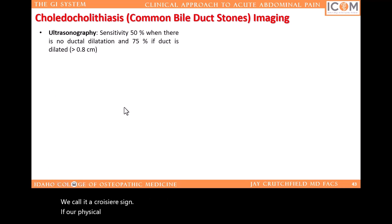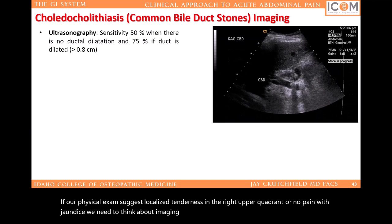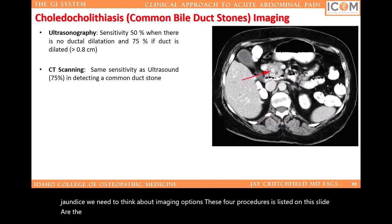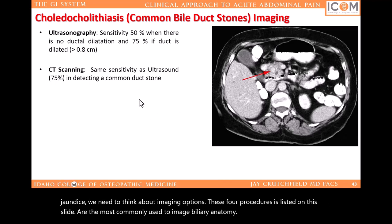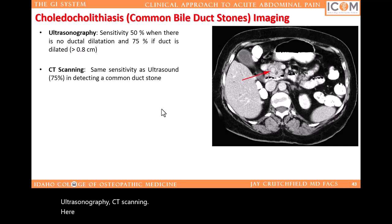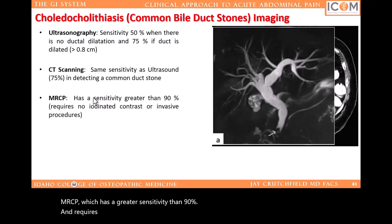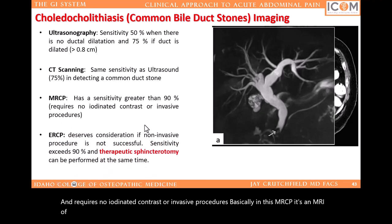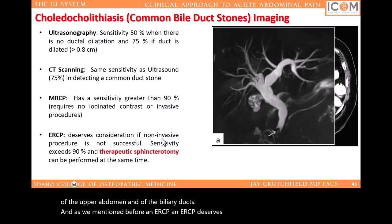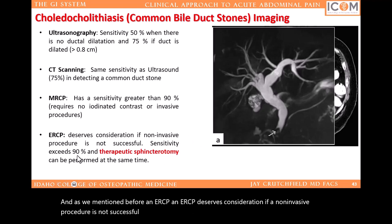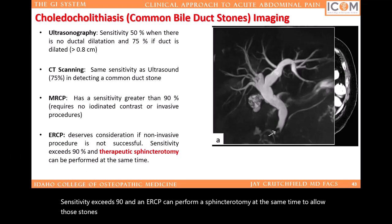If our physical exam suggests localized tenderness in the right upper quadrant or no pain with jaundice, we need to think about imaging options. These four procedures are the most commonly used to image biliary anatomy: ultrasonography, CT scanning — here we can see a stone in the common bile duct — MRCP, which has a sensitivity greater than 90% and requires no iodinated contrast or invasive procedures, and an ERCP. An ERCP deserves consideration if a non-invasive procedure is not successful in diagnosing. Sensitivity exceeds 90%, and an ERCP can perform a sphincterotomy at the same time to allow those stones to pass through the sphincter of Oddi.